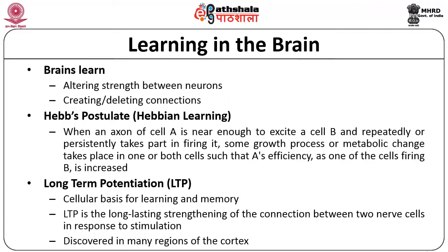Having understood what a neuron is, let us now understand how learning happens in the brain. The brain learns by means of the strengths between neurons. One layer of neurons connects to another layer by means of a synaptic link, and learning is based on the weight associated with this link. Creating and deleting connections is the process by which the brain learns — either a new synaptic link may be created or an existing one deleted, and this indicates whether a brain learns or not.